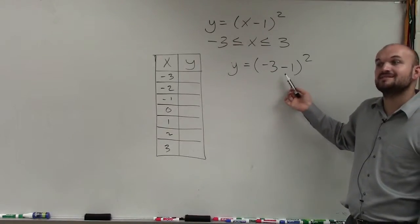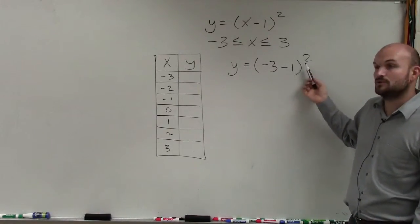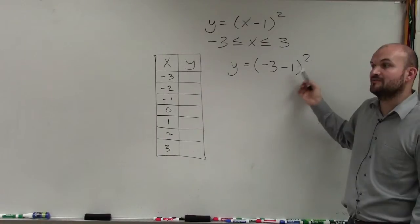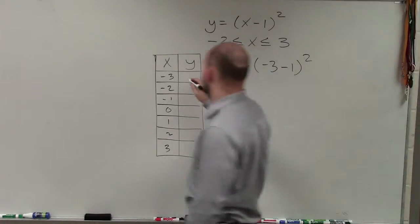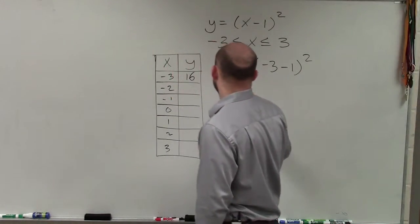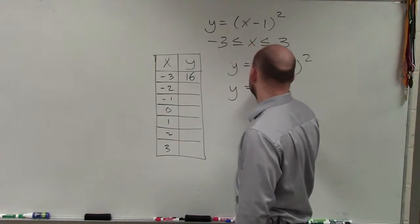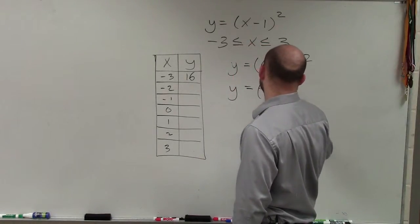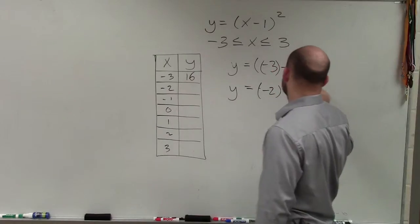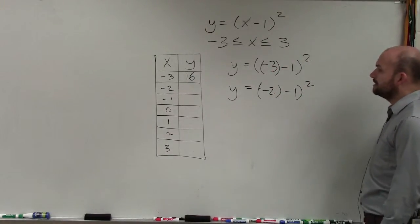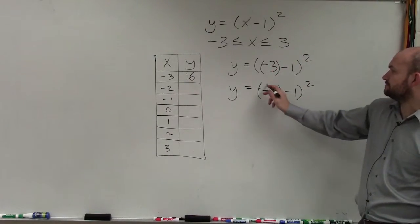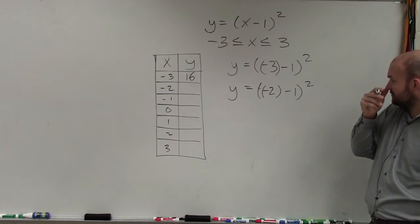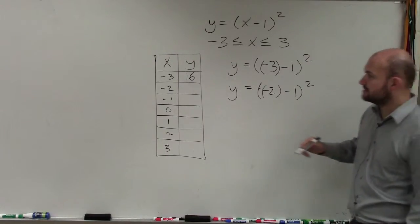Negative 3 minus 1 is negative 4. Negative 4 squared is negative 4 times negative 4, which is positive 16. I like to put these in parentheses. I should have done that. Then we do negative 2 minus 1 squared. Negative 2 minus 1 is negative 3. Negative 3 squared is positive 9.